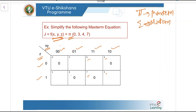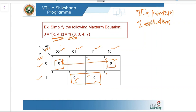We check the loaded values: 0 is loaded, then 3 is loaded, next is 4, and next is 7. The next step is to group the 0s. These two 0s can be grouped together. Similarly, this 0 and this 0 can be grouped — these two are logically adjacent. Let us write the expression.